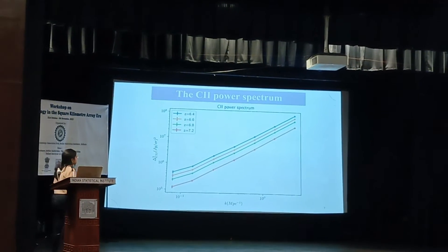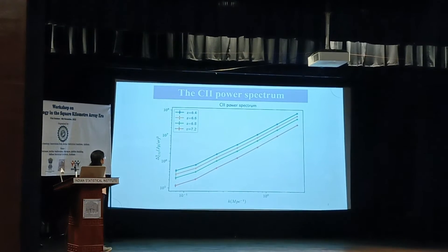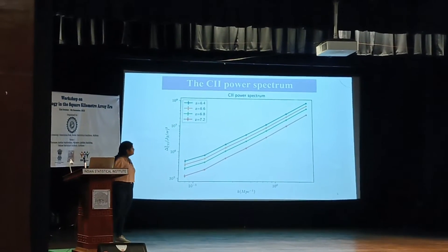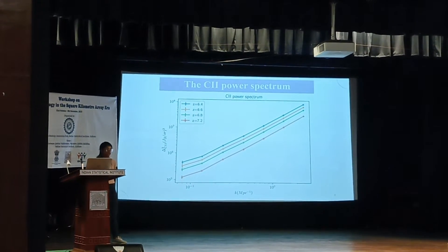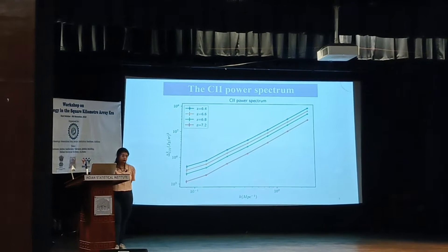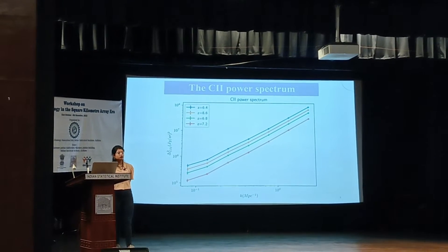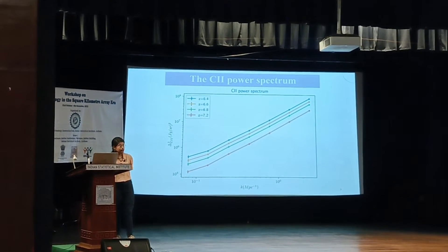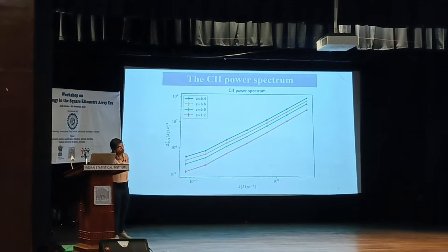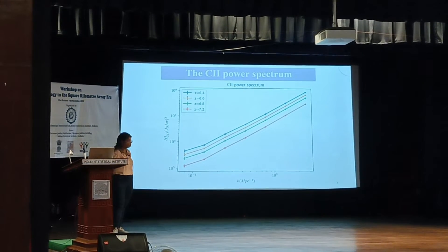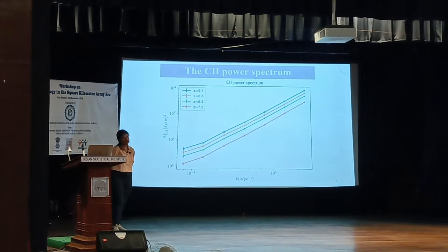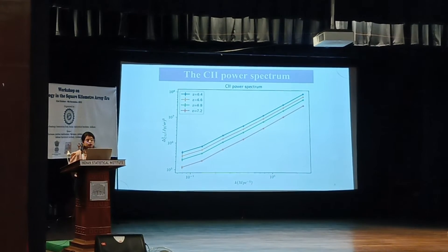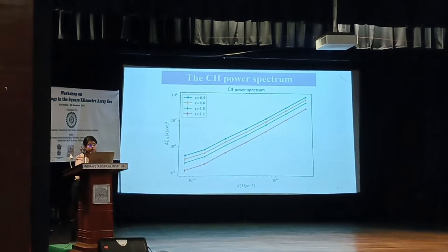As for CII, this is what the CII power spectrum looks like. CII is interesting because it is proposed that CII can be used as a tracer of star formation rate, and hence as a tracer of galaxies — source galaxies — which are actually re-ionizing the intergalactic medium.